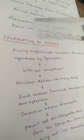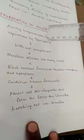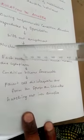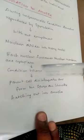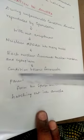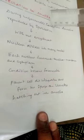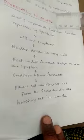Next is Sporulation in Amoeba. During unfavorable conditions, Amoeba reproduces by Sporulation. Without an encysting, the nucleus divides into many nuclei. Each nucleus is surrounded by a nuclear membrane and cytoplasm. When conditions become favorable, the parent cell disintegrates and forms spores, which are liberated and hatch out from the Amoeba. This process is called Sporulation in Amoeba.